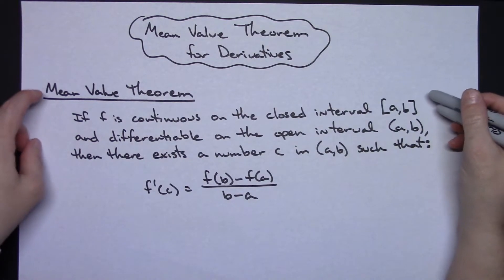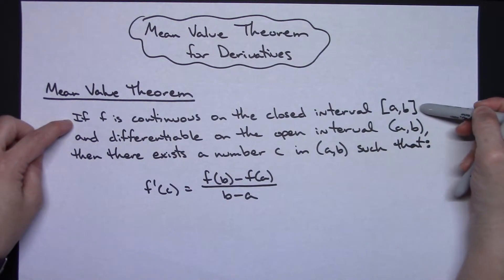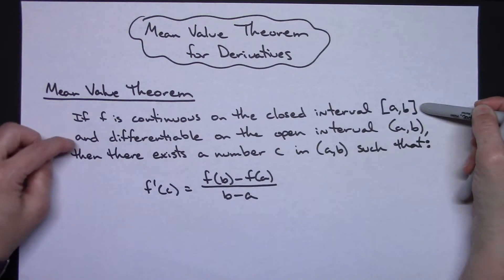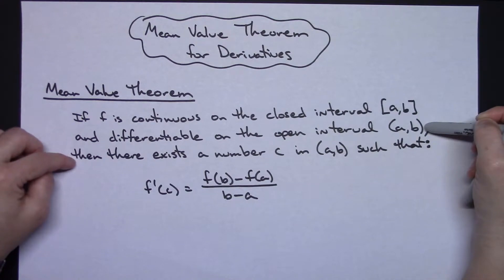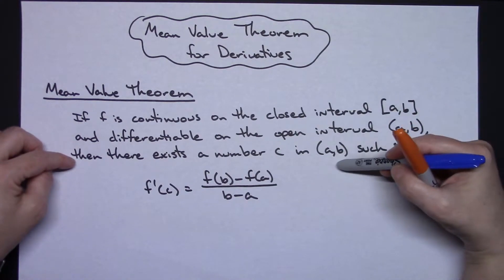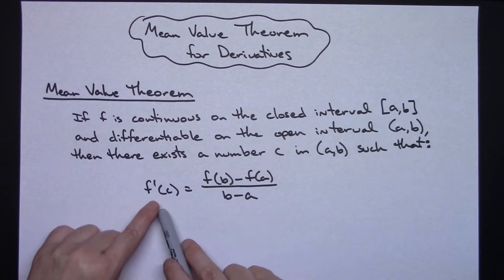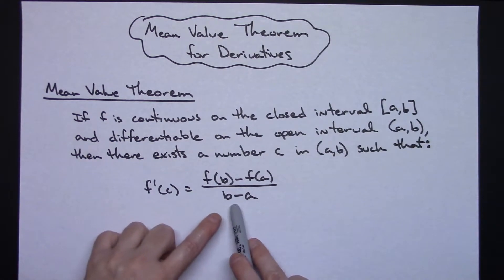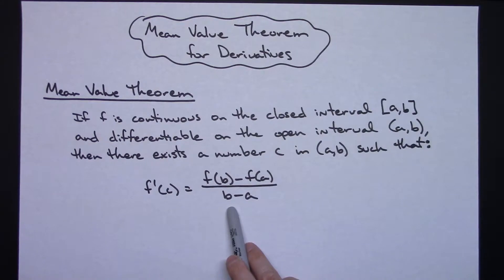The mean value theorem states that if f is continuous on the closed interval from a to b and differentiable on the open interval from a to b, then there exists a number c in the open interval from a to b such that the derivative at c is equal to the average rate of change on that interval. It's a pretty straightforward definition.